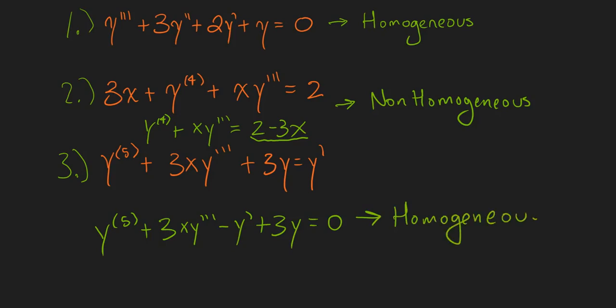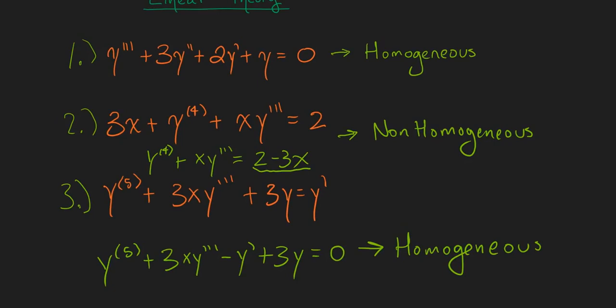One other thing we can point out is that in the second case, where it was non-homogeneous, we could write the associated homogeneous equation in the following way. That would be the fourth derivative of y plus xy triple prime is equal to zero. If we set this equal to zero, then this would be the associated homogeneous equation for this non-homogeneous equation.